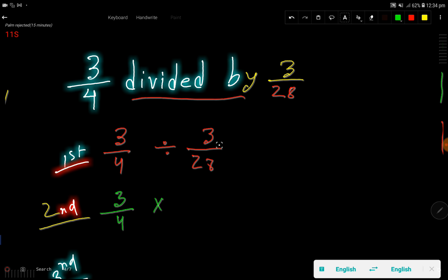In the second step I'll just change this division sign by multiplication sign, then I have to take the reciprocal of this fraction, the 28 by 3. The reciprocal of this fraction will be like this. You have to interchange the position of numerator and denominator.